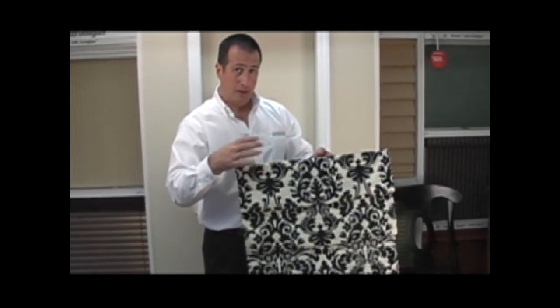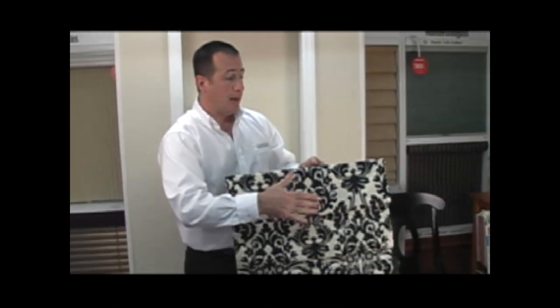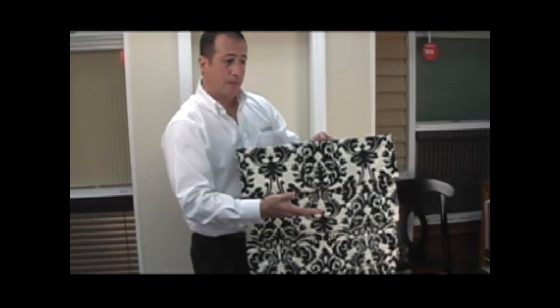We also offer a top down bottom up option which will also have a valance and the cords forward. The top down bottom up allows the shade to drop down from the top and also lift up from the bottom.